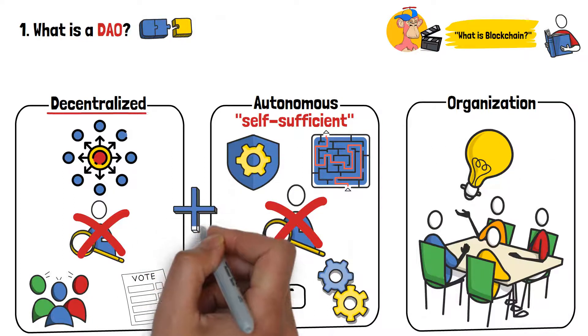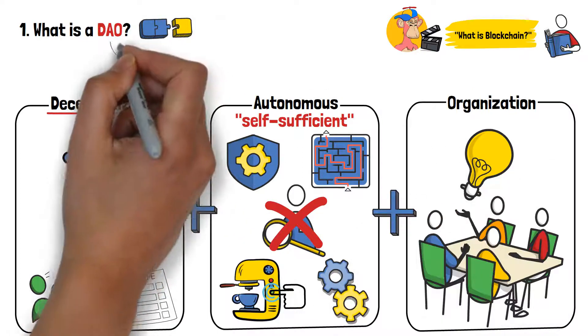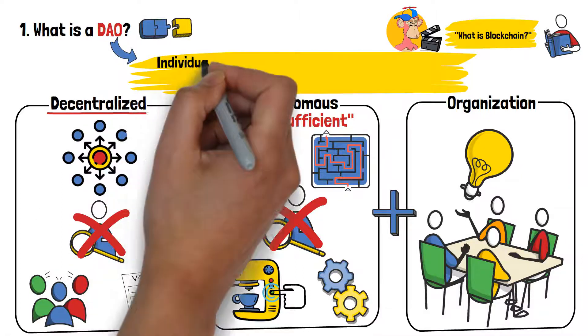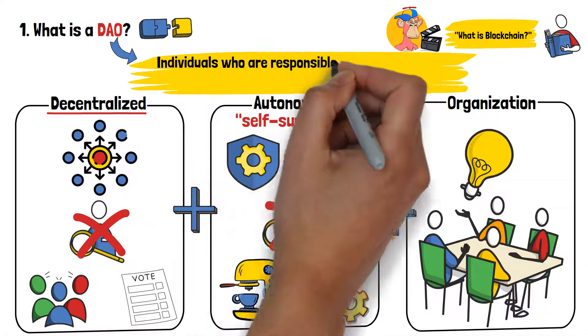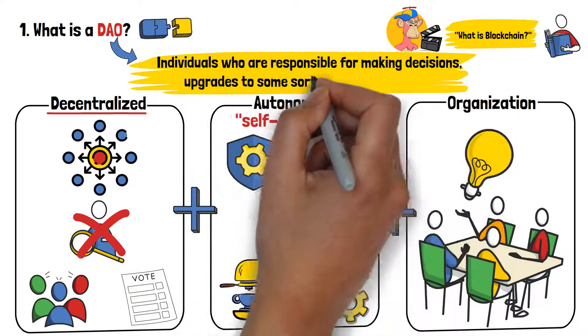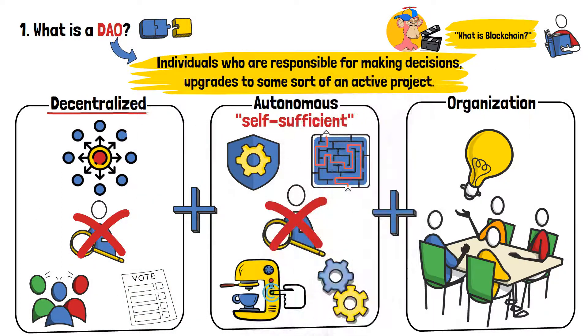Lastly, in this context, organization refers to the fact that there is a group of people making the decisions. So, when you add all of that together, DAO simply stands for a group of individuals who are concerned with some sort of an active project, and are responsible for making decisions, changes, and upgrades to the said project.